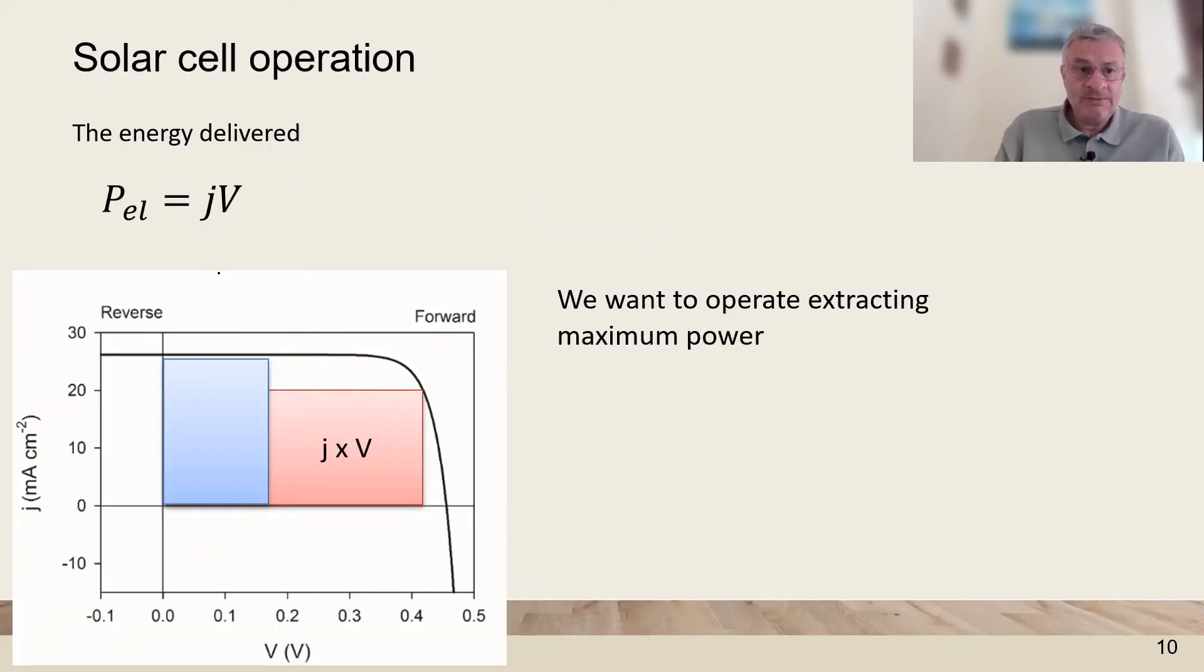The power that we obtain in the external load depends on the voltage point of operation. Because at each point in the JV curve we will have the product of current times voltage. It's essentially the area of the square J times V.